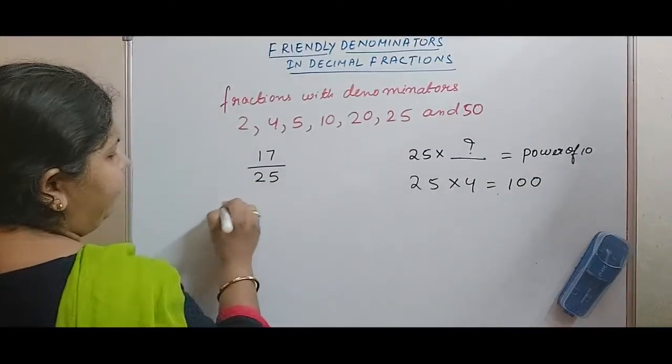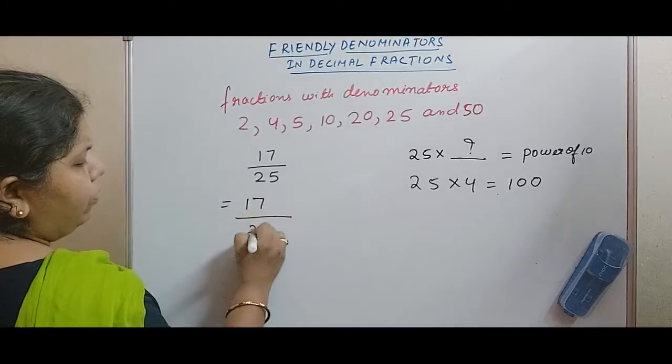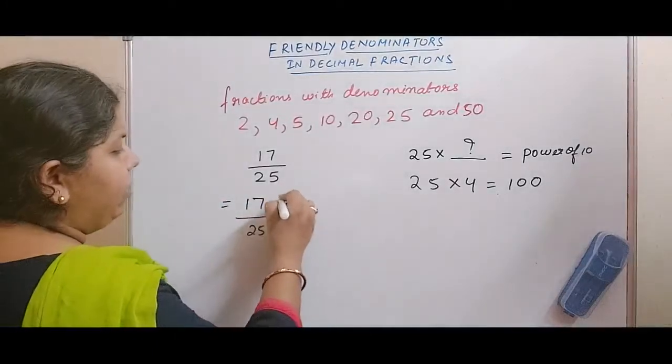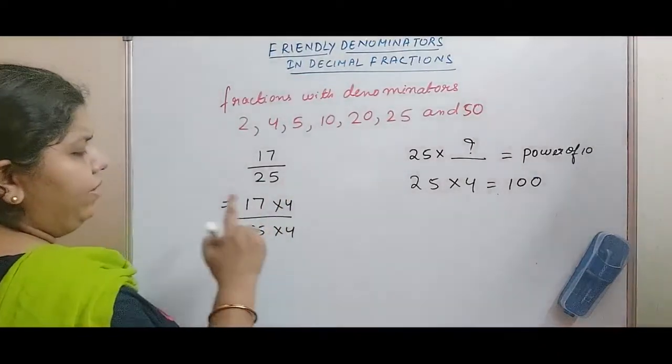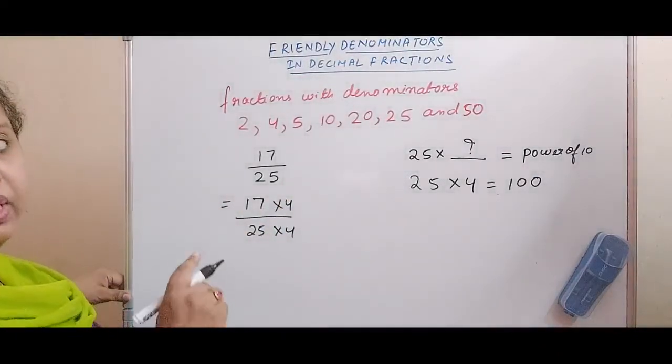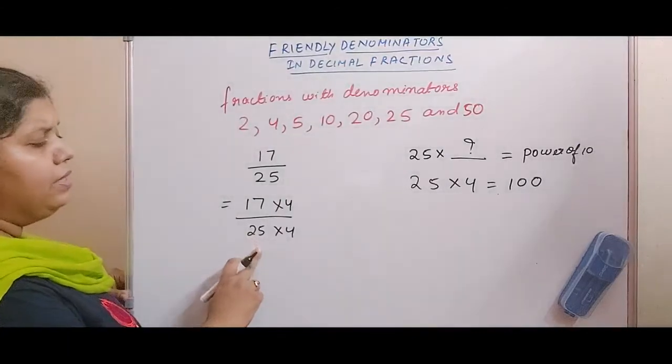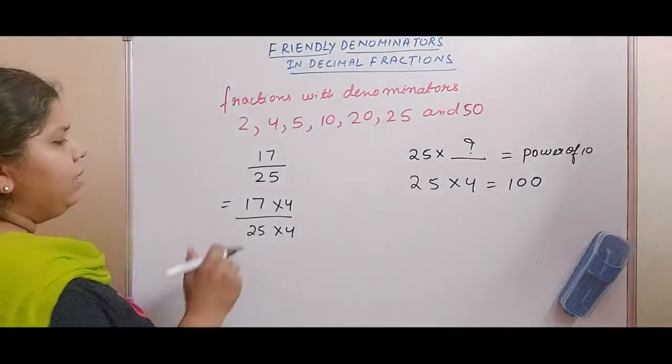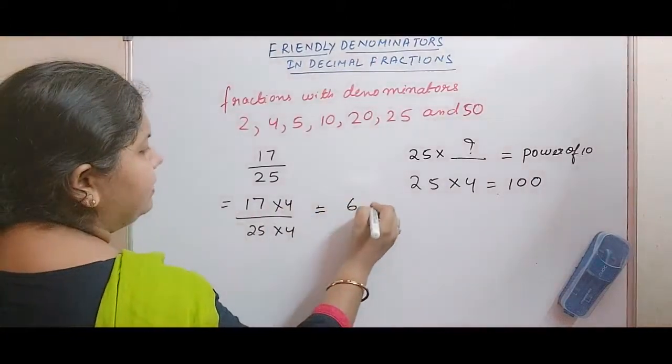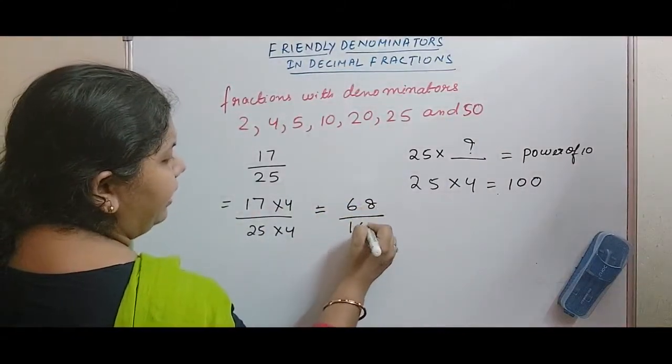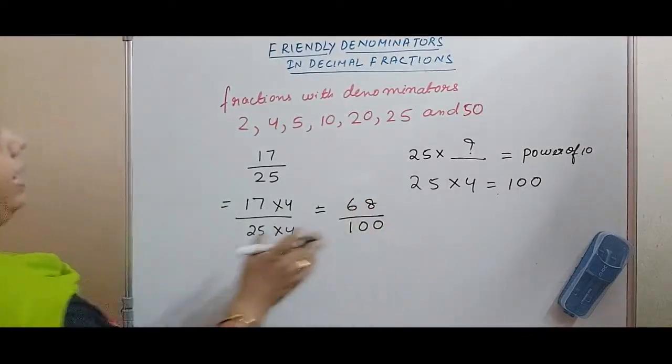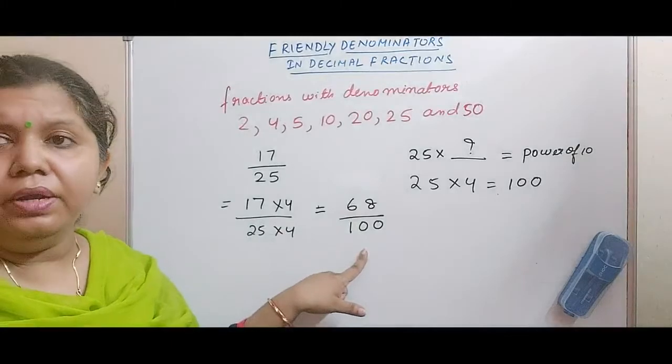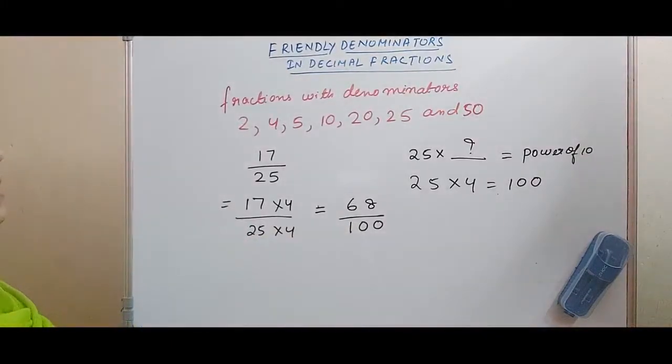So that means this 25 can be changed to the denominator 100 very easily. I will change into its equivalent form with denominator 100. If I multiply 4 with denominator 25, then I have to multiply 4 with the numerator 17 also. Then what will be my answer? It will be 68 by 100. Now 68 by 100 is a decimal fraction.